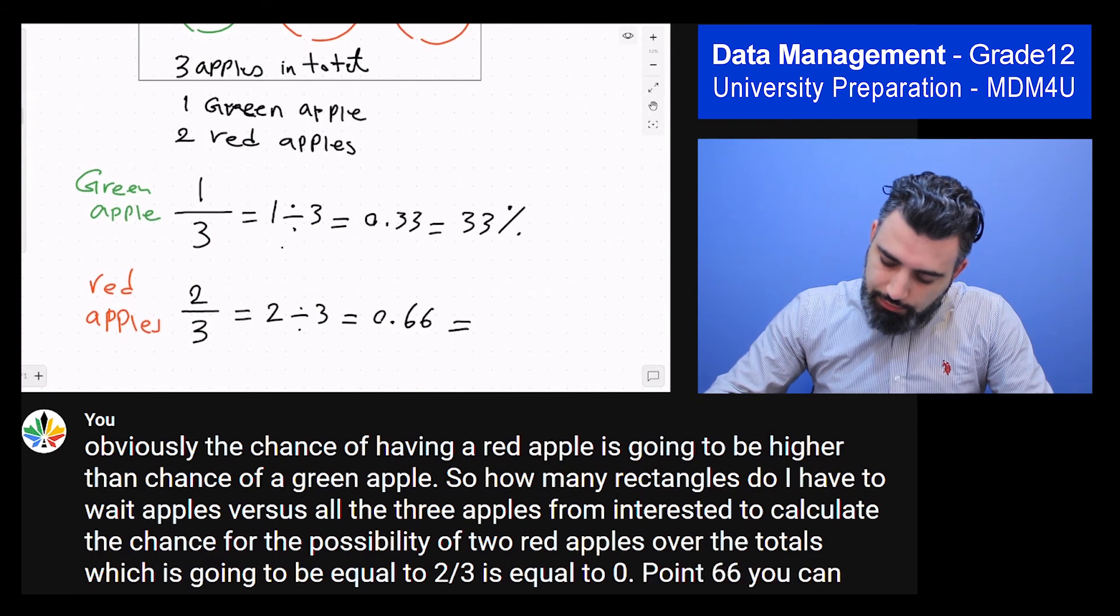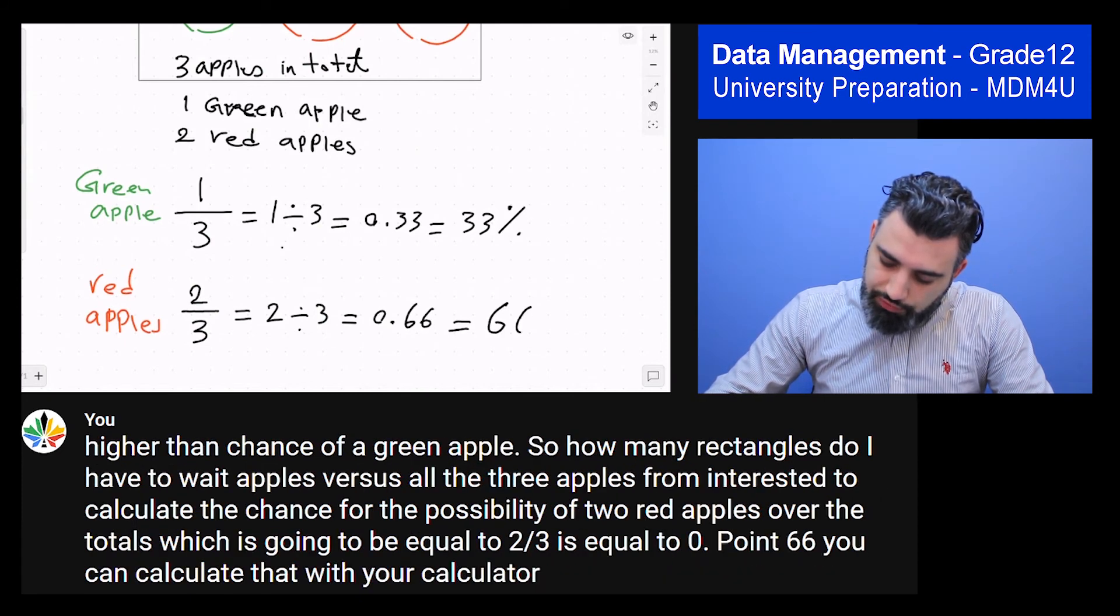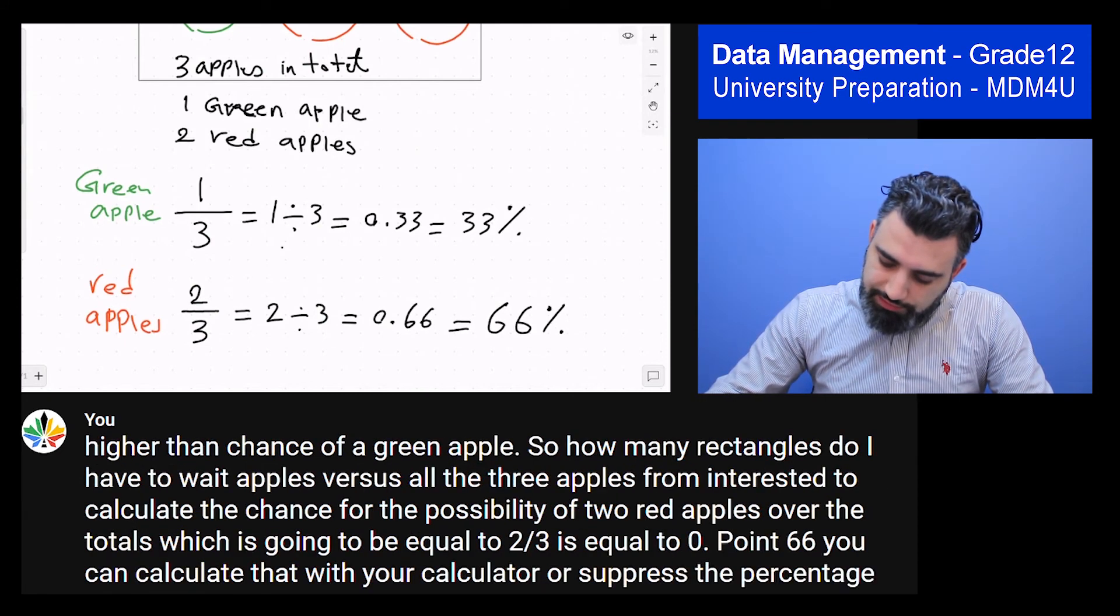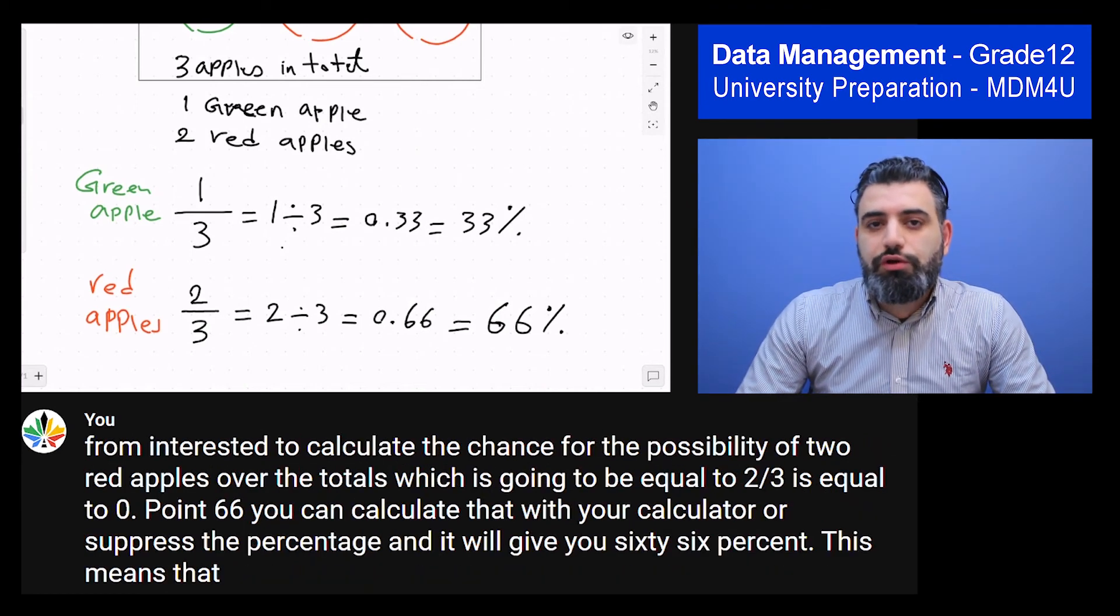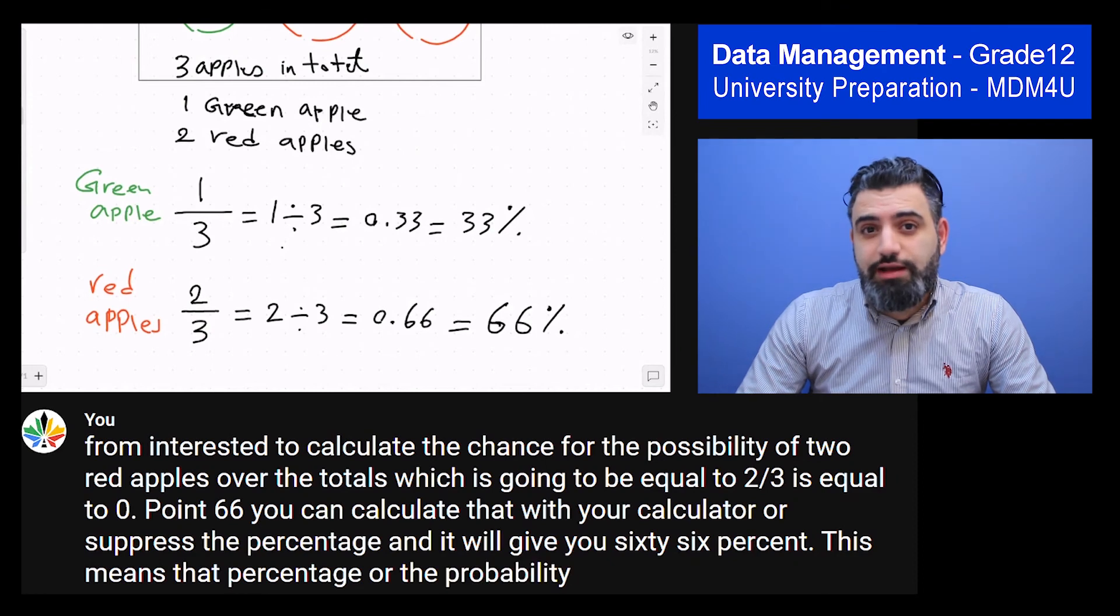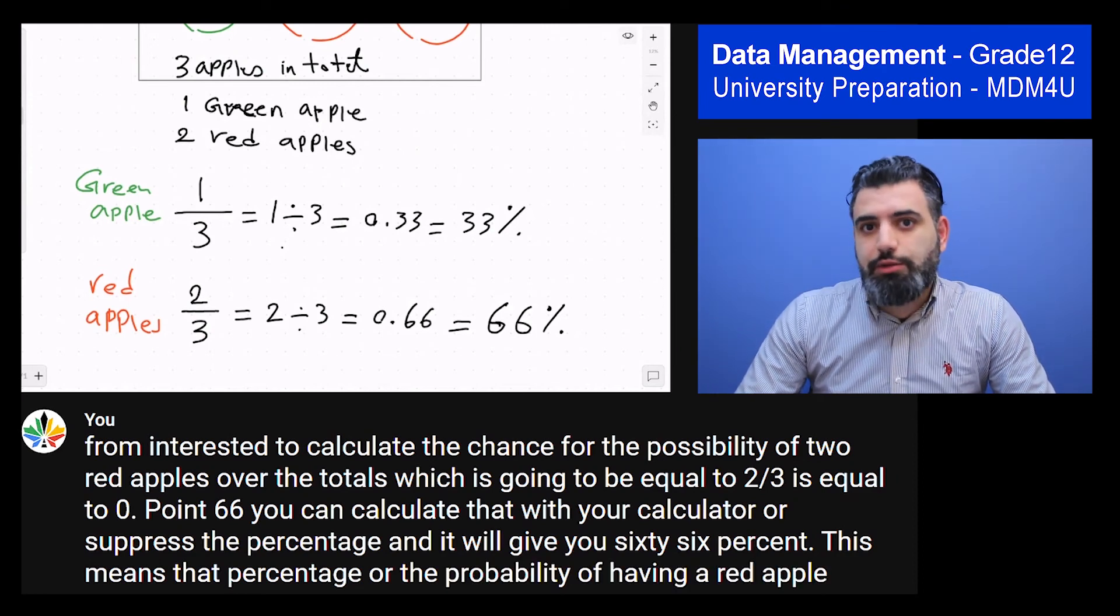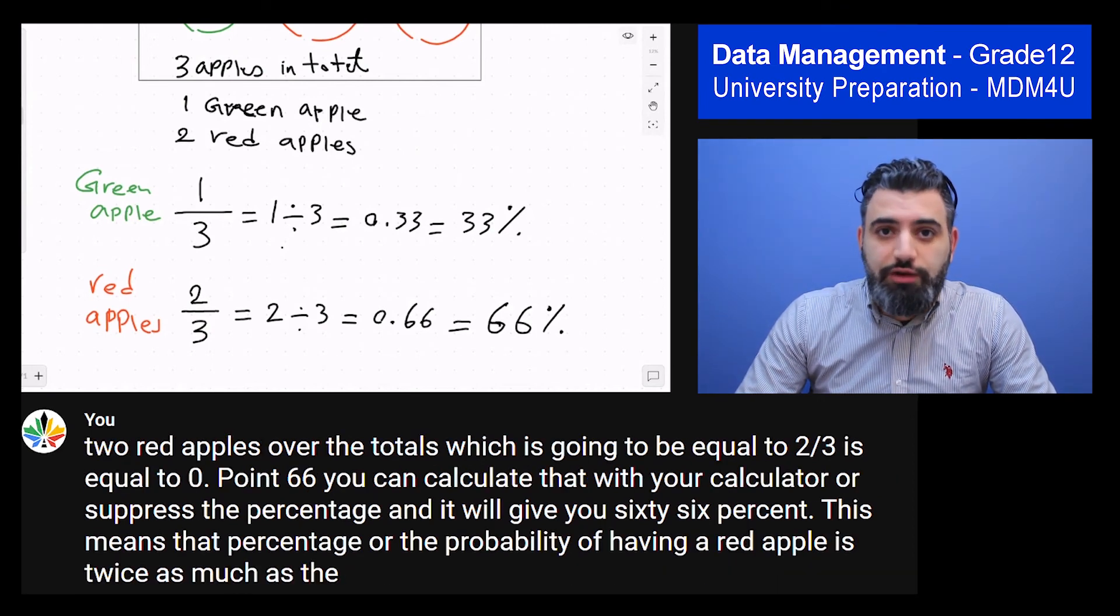You can calculate that with your calculator. Also press the percentage and it will give you 66%. This means the percentage or the probability of having a red apple is twice as much as the probability of a green apple.